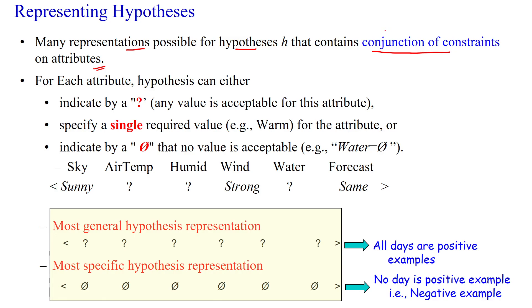Based on that, the hypothesis is defined with the conjunction of constraints on attributes. The constraints are defined with three different types. The first constraint is the '?' symbol, which means it will accept any value. For example, sky is having three different values: sunny, cloudy, or rainy. If you mention with a '?' symbol, then that particular hypothesis will accept sunny, rainy, or cloudy — any value will be acceptable.